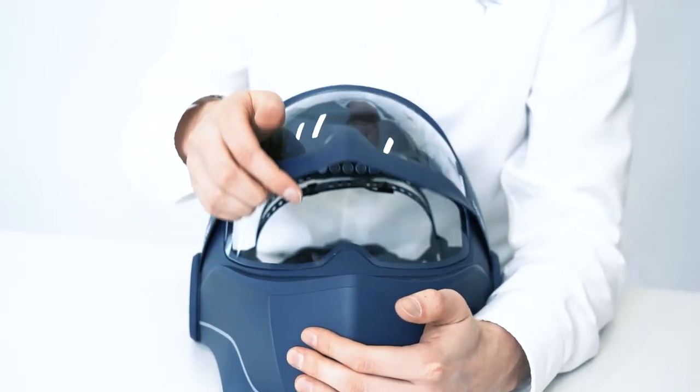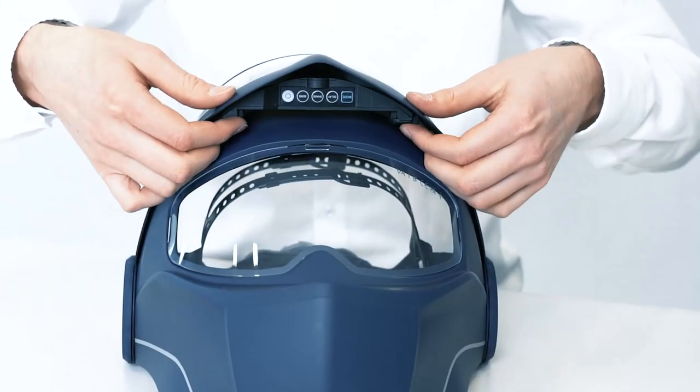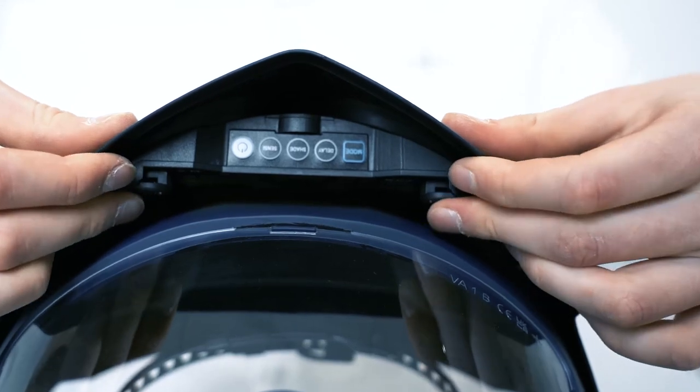To change the inner lens, remove the ADF from the helmet shell. To do this, push the two latches inwards.